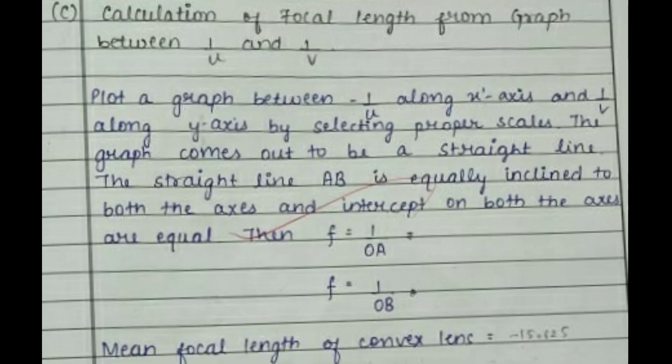This image shows the calculation that has been performed after plotting the graph between 1 by u and 1 by v. You can see the focal length again is somewhat the same. It's 15.625, which is almost equal to both of them, so there is not a very major difference. It can be neglected, so the readings are almost the same.